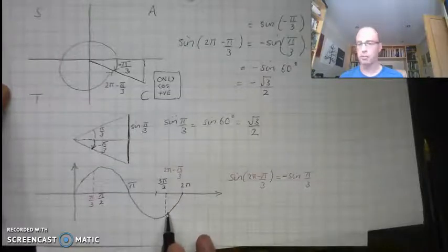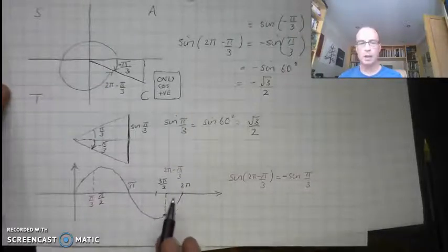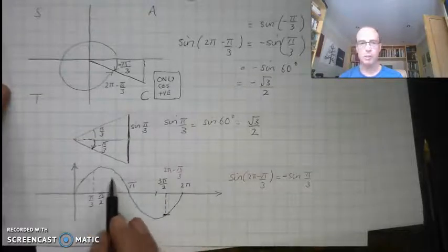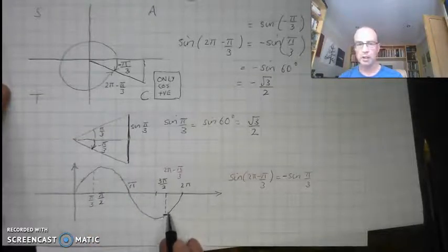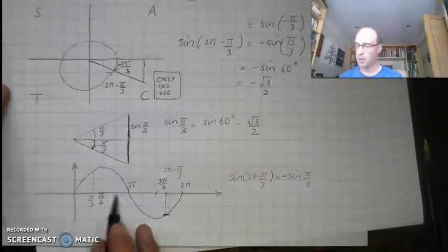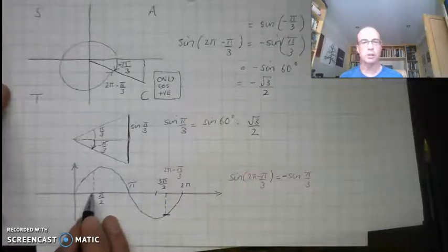So if I follow it down to my curve, I'm looking for this value. Well, I can use my symmetry because I know that this part of the curve is symmetrical. So this height, if this is π/3, 60 degrees, is going to be the same height as π/3 or 60 degrees in from 0.